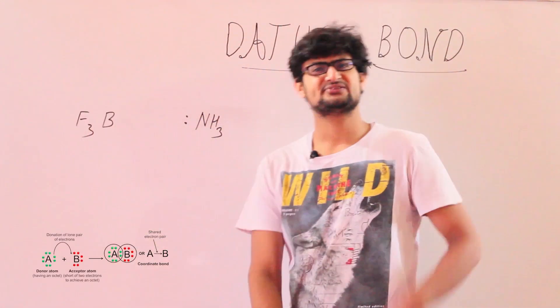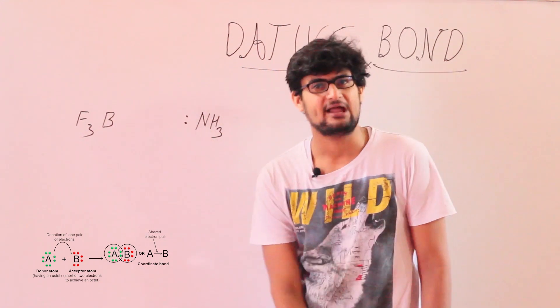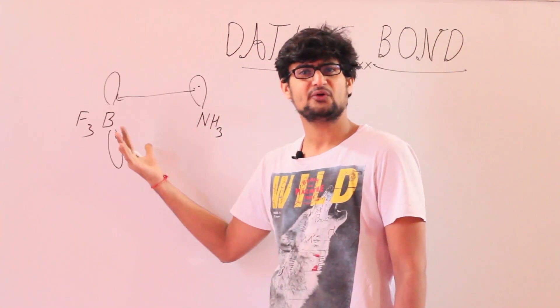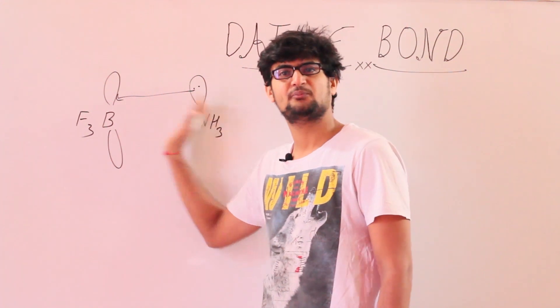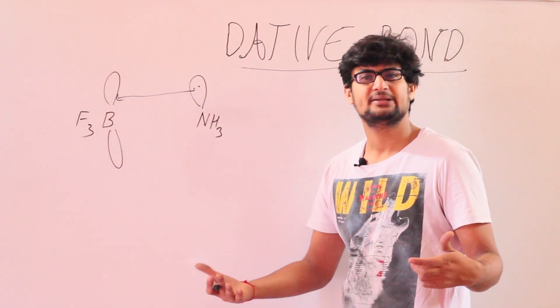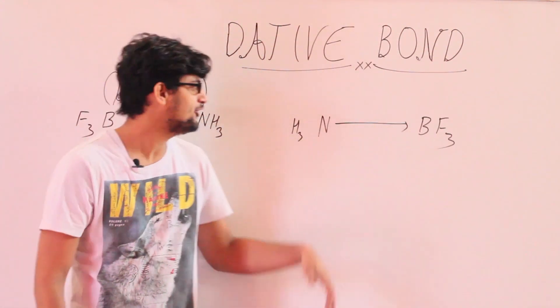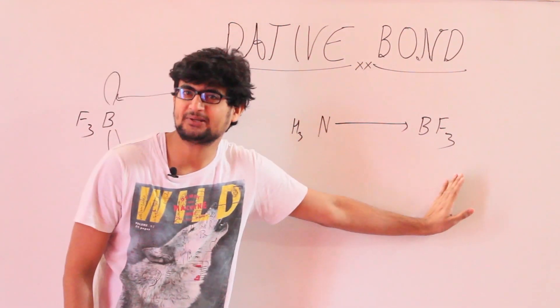As you all know, boron contains a vacant orbital while nitrogen contains a lone pair of electrons. So the electrons of nitrogen will be donated to boron in the vacant orbital such that a bond is formed between these two molecules. This bond is denoted by an arrow which goes from the donor atom to the acceptor atom.